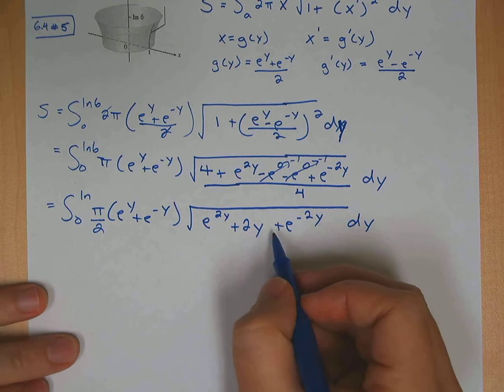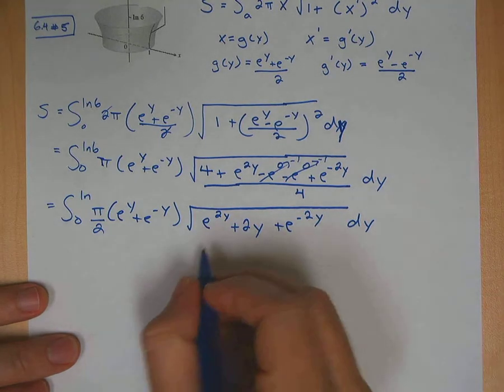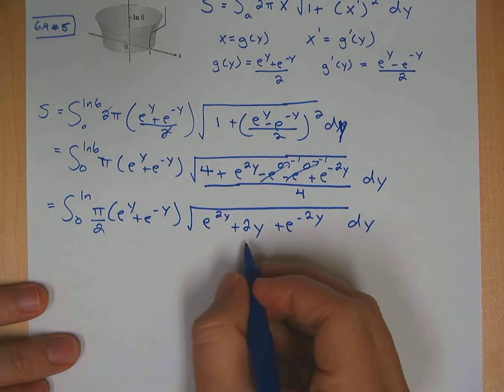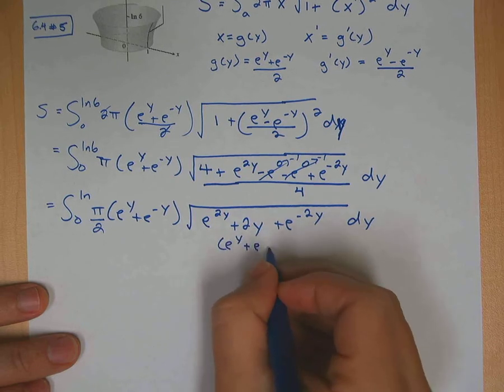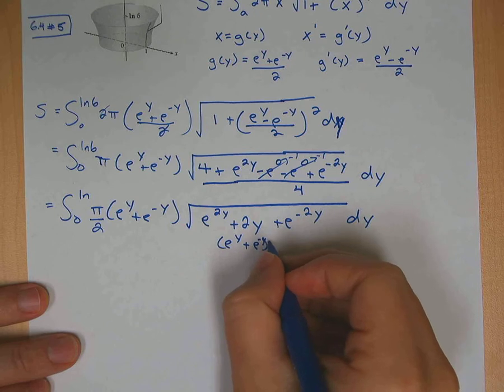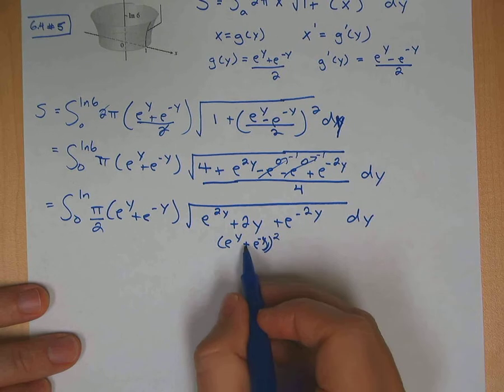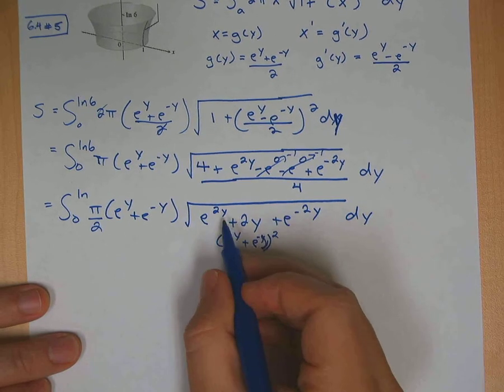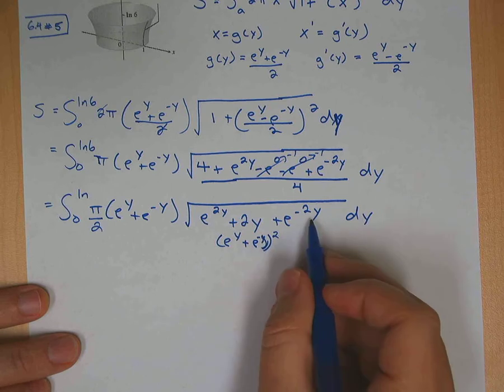Now you want to factor this. And this sometimes is a little difficult to factor until you do enough of these that you recognize it. But this is going to factor into a perfect square. Underneath here, this is going to factor into e to the y plus e to the negative y. Now notice if you square this out, e to the y times e to the y is e to the 2y. And e to the negative y times e to the negative y is e to the negative 2y.